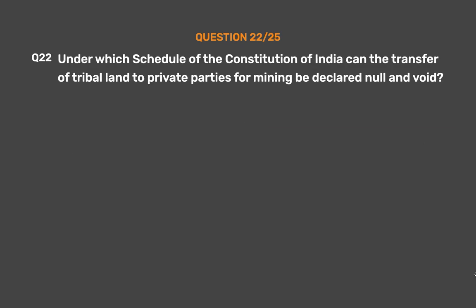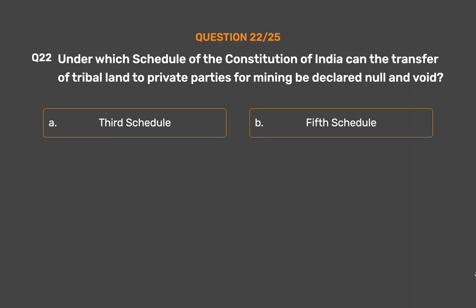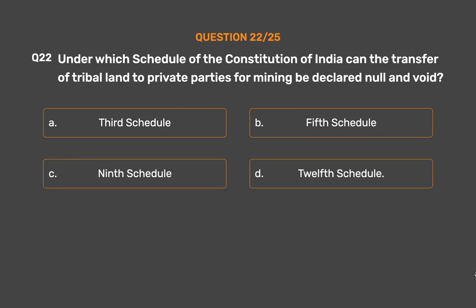Question No. 22: Under which schedule of the Constitution of India can the transfer of tribal land to private parties for mining be declared null and void? Option A: Third Schedule. Option B: Fifth Schedule. Option C: Ninth Schedule. Option D: Twelfth Schedule.